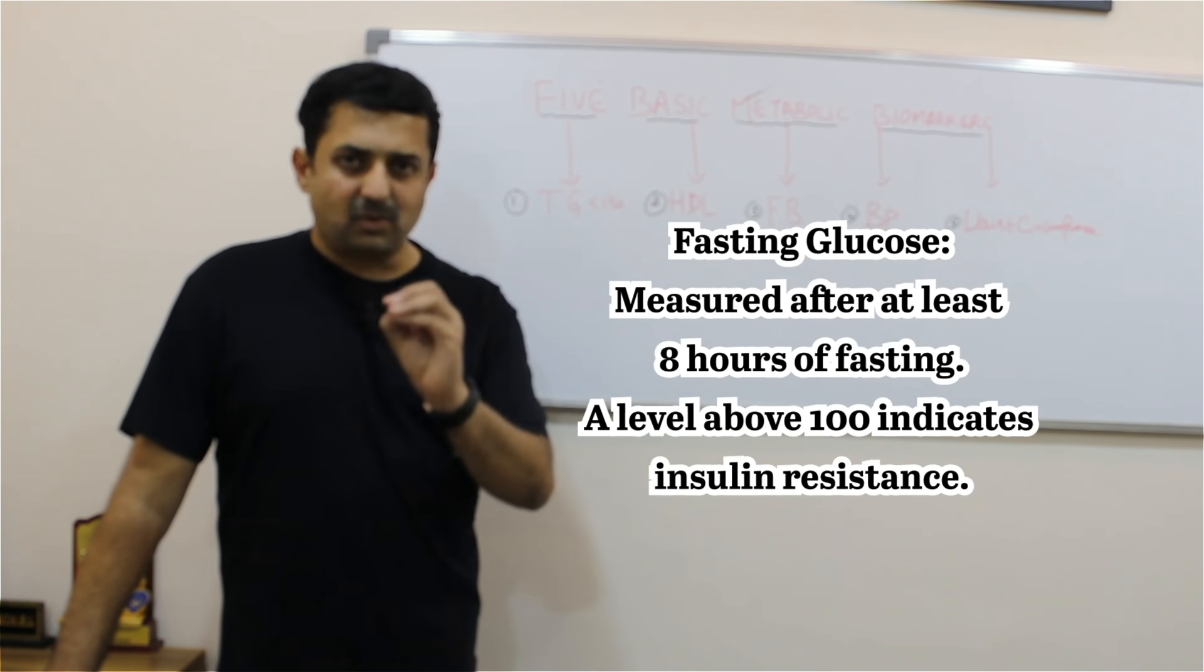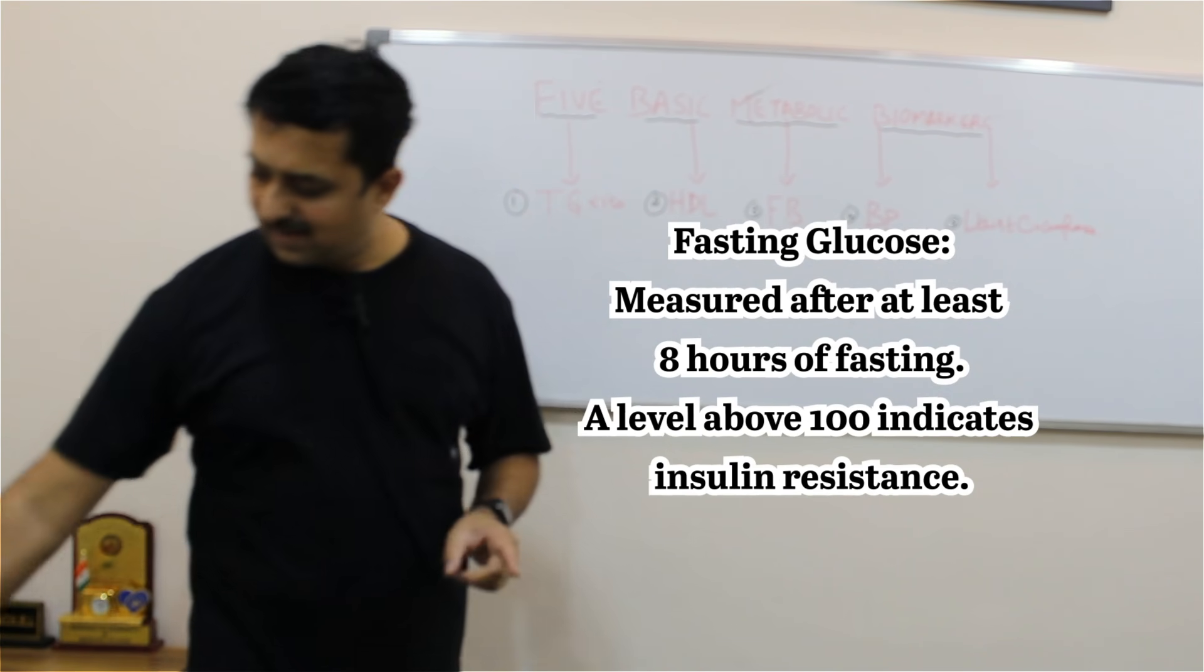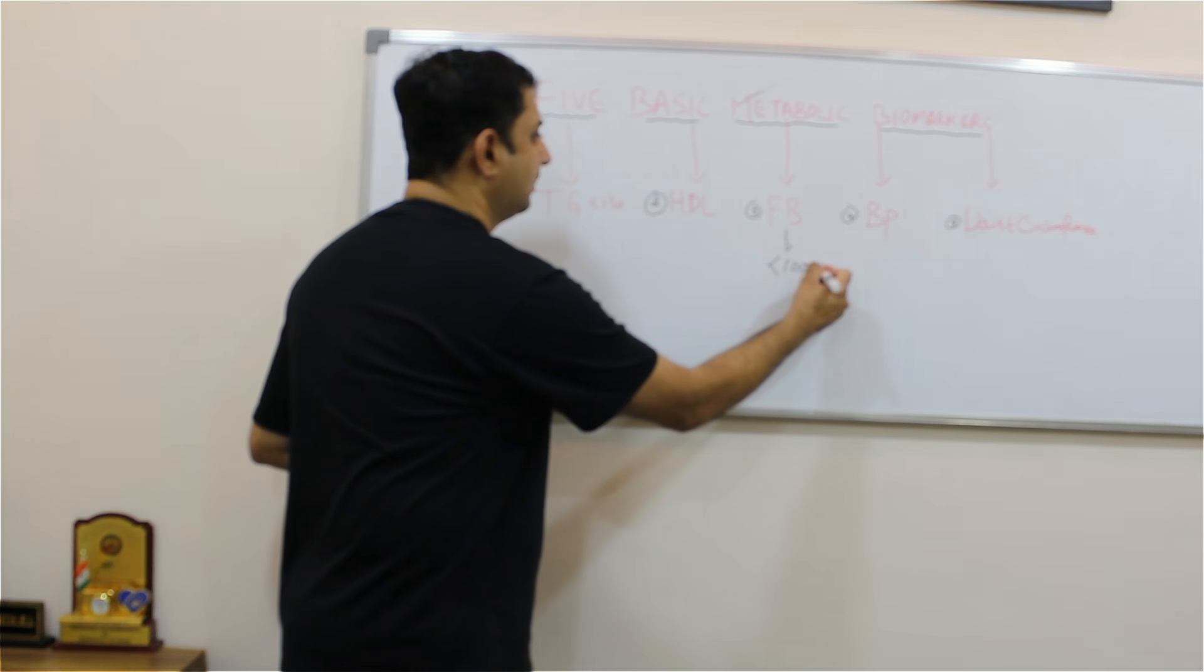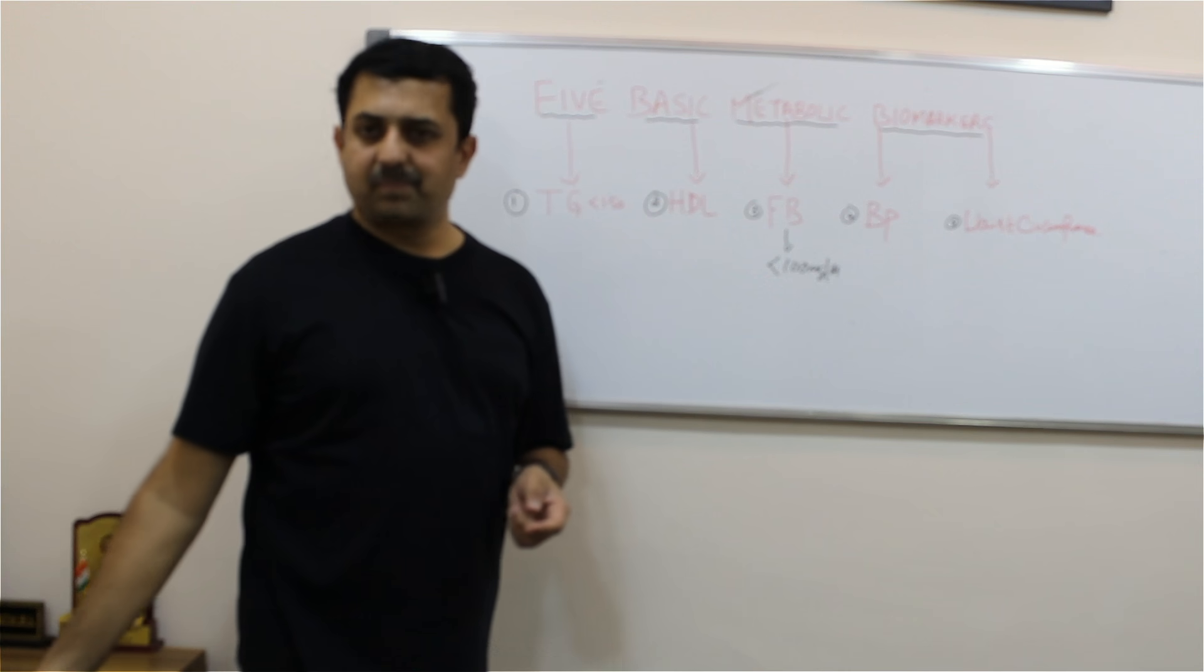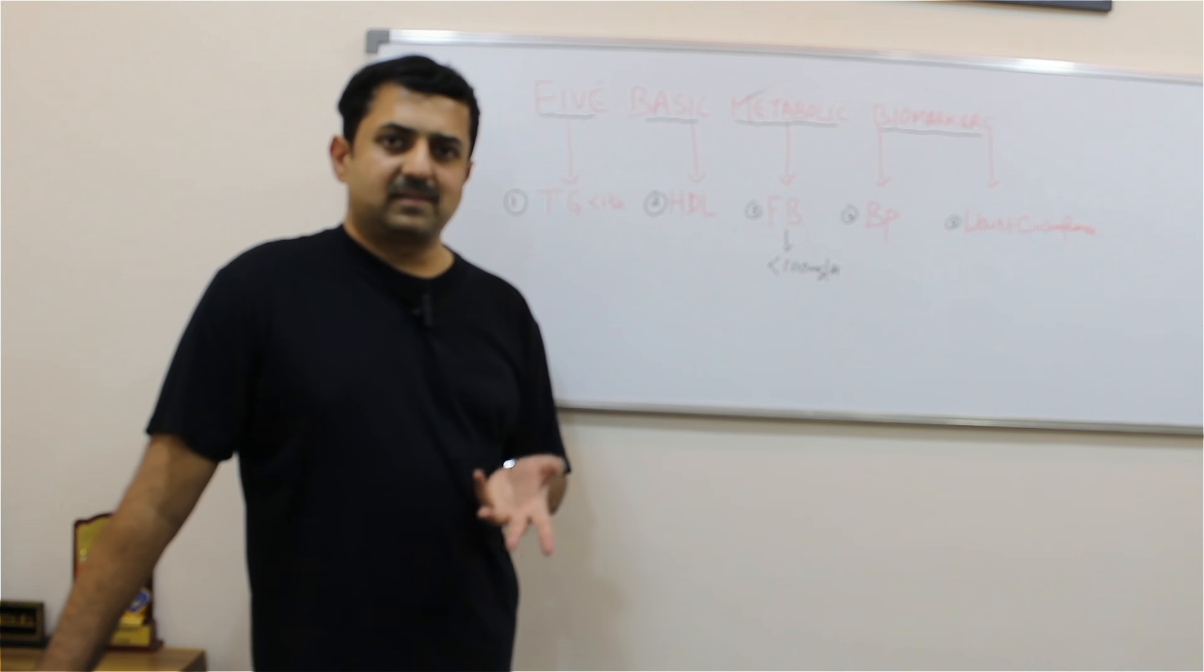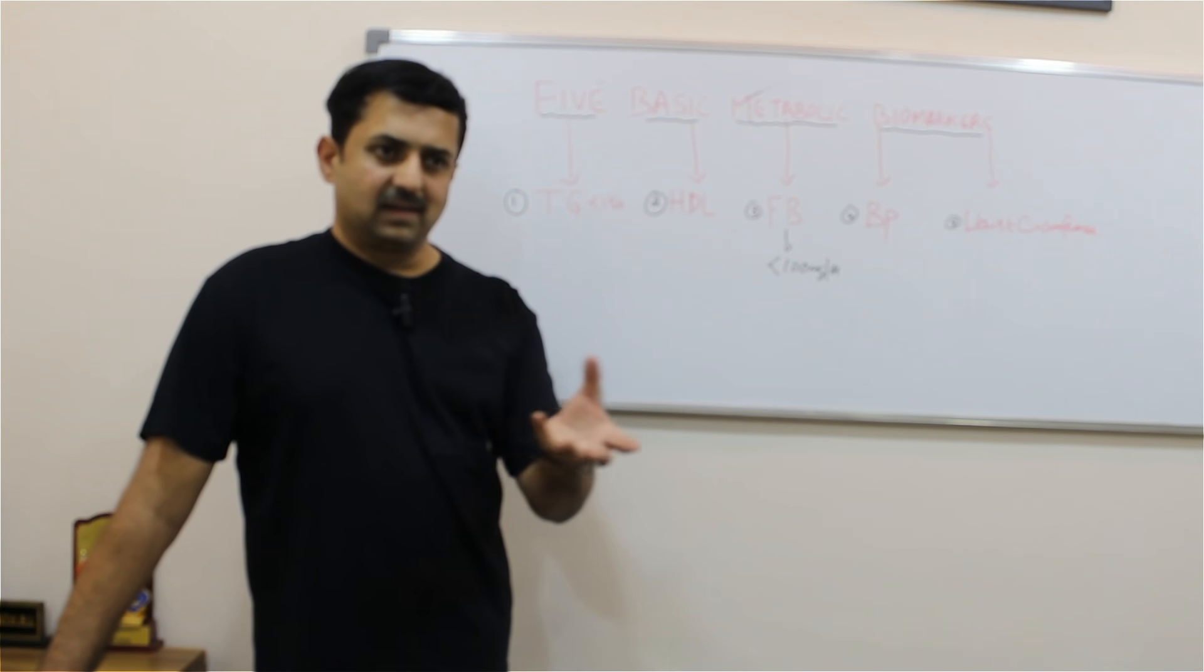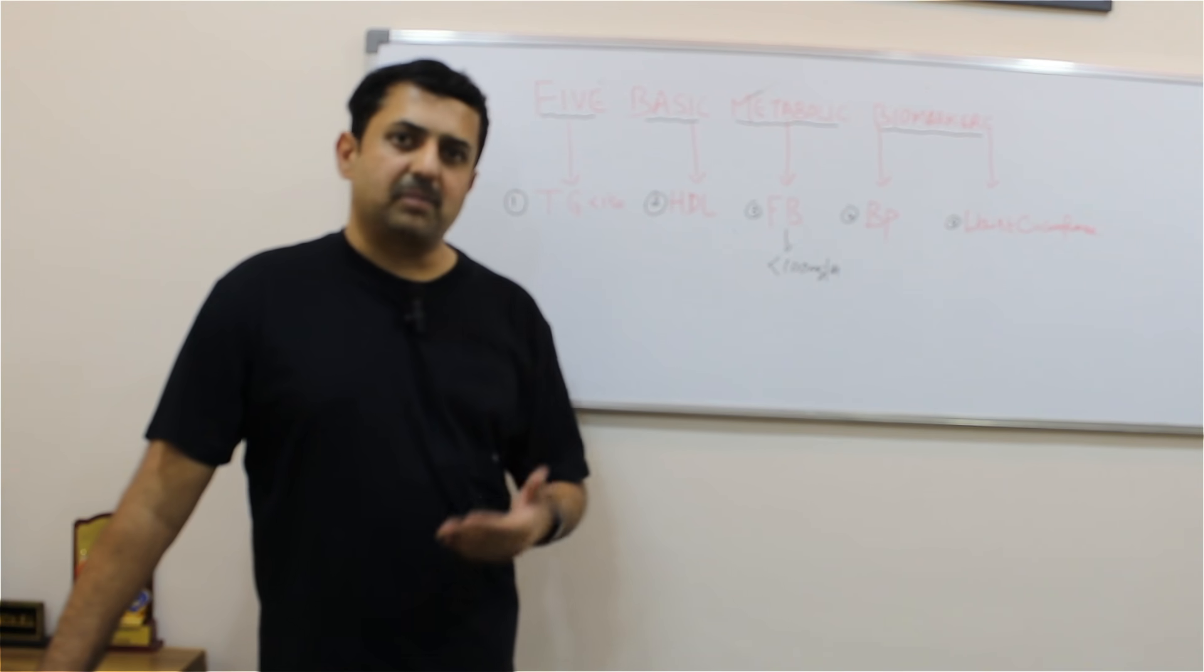So keep your fasting blood sugar always less than 100. Fourth comes blood pressure. BP is multifactorial and there are various measures to check the BP. In hospitals they use mercury sphygmomanometers. There are electronic BP apparatus available.